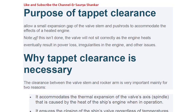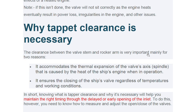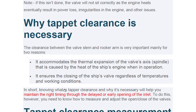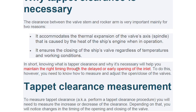The purpose of tappet clearance is to allow a small expansion gap of the valve stem and push rod to accommodate the effects of a heated engine. If this is not done, the valve will not sit correctly as the engine heats, eventually resulting in power loss and irregularities. Why is tappet clearance necessary? The clearance between the valve stem and the rocker arm is important mainly for two reasons: it accommodates the thermal expansion of the valve spindle caused by engine heat, and it ensures the closing of the valve regardless of temperature and working conditions.